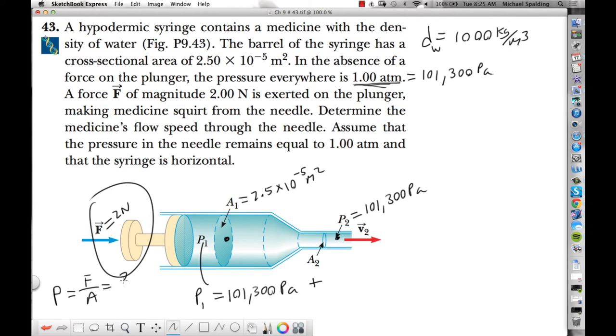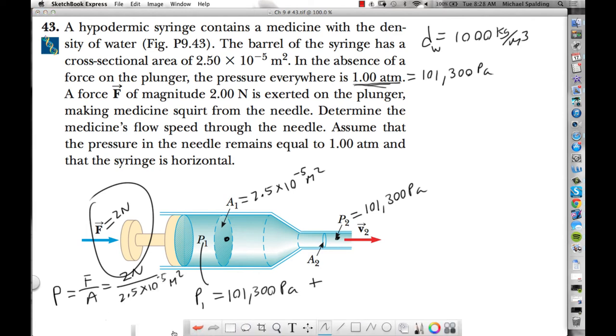Force over area. The force is 2 newtons. The area is 2.5 times 10 to the negative 5 meter squared. So this comes out as 80,000 pascals. Newton over meter squared is pascal.